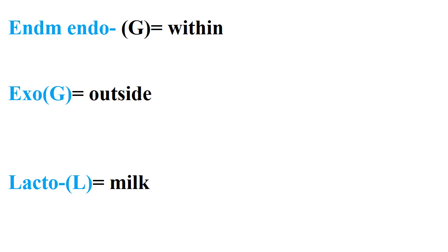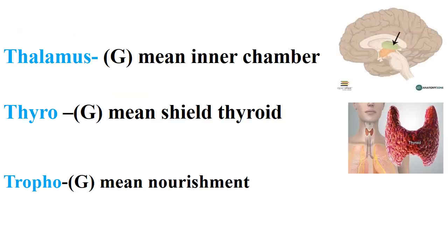Another term is 'end' or 'endo', meaning within, and 'exo', meaning outside. The term 'lacto' means milk. Also, 'thalamus' means inner chamber — the thalamus is important and you will get more details in physiology. The term 'thyro' means shield or thyroid, referring to the thyroid gland.